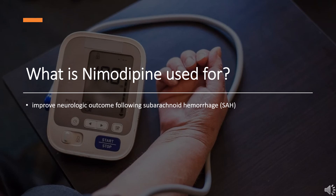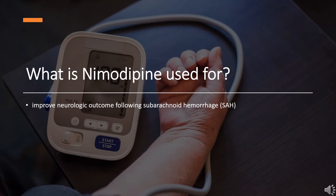Nimodipine is used as an adjunct to improve neurologic outcome following subarachnoid hemorrhage (SAH) from ruptured intracranial aneurysms, by reducing the incidence and severity of ischemic deficits.